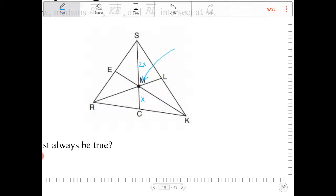If I call the length of RL, or actually ML, let's say we call that segment there Y, then that means RM is going to be 2Y.